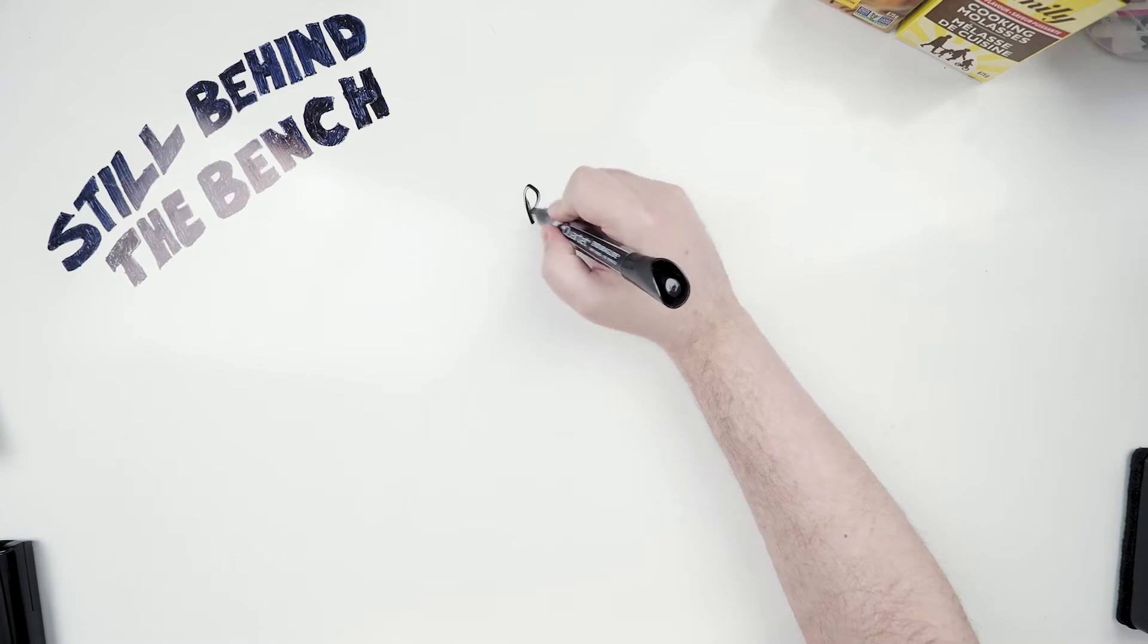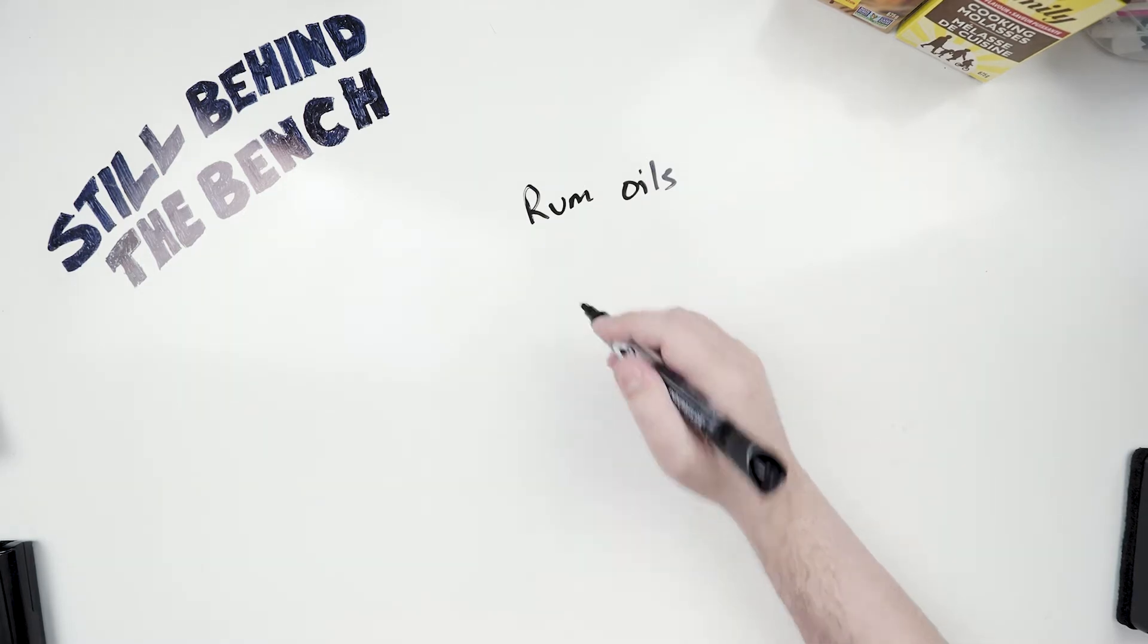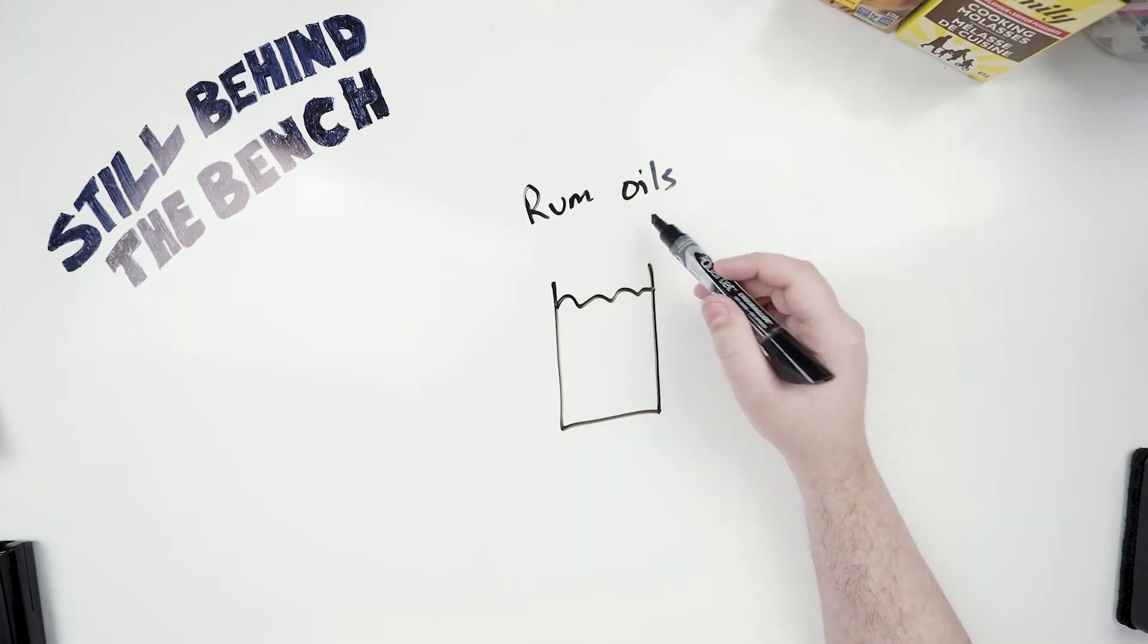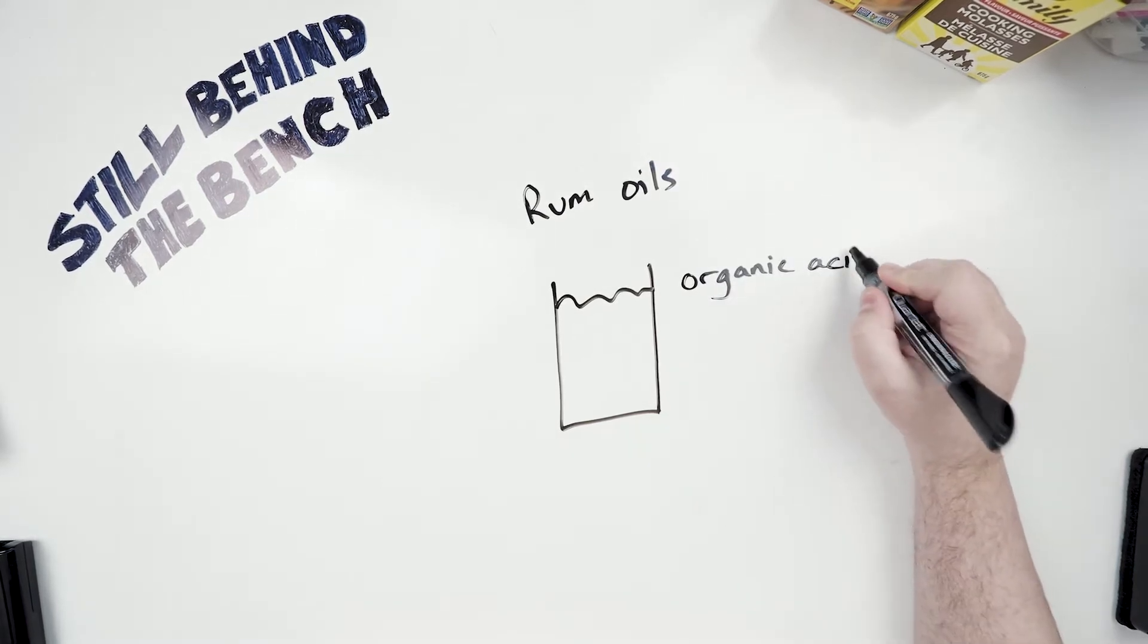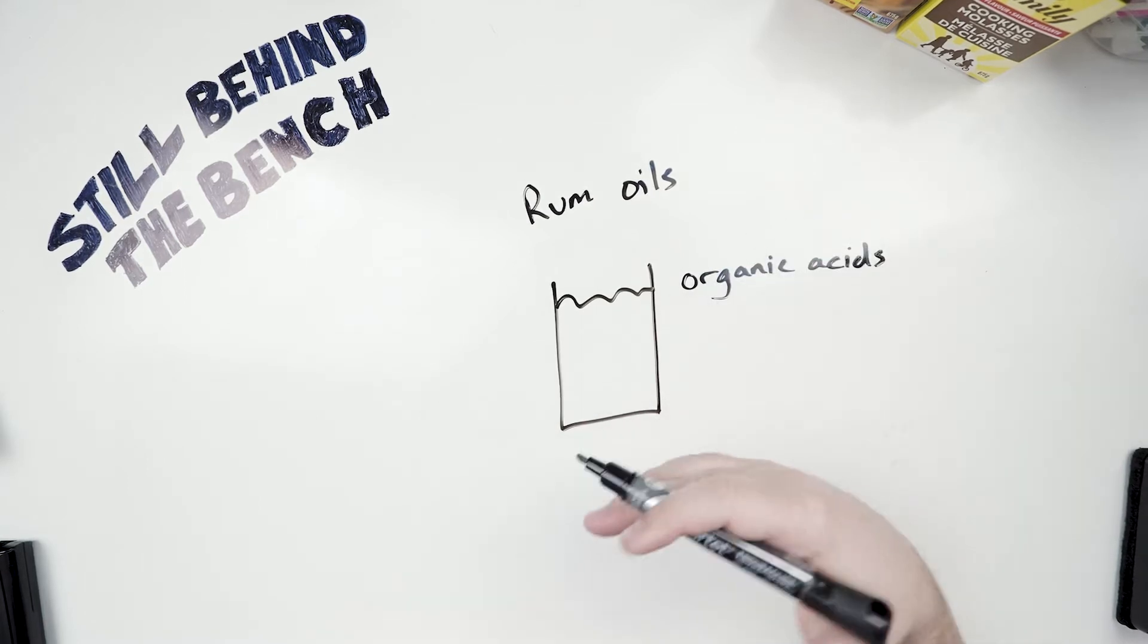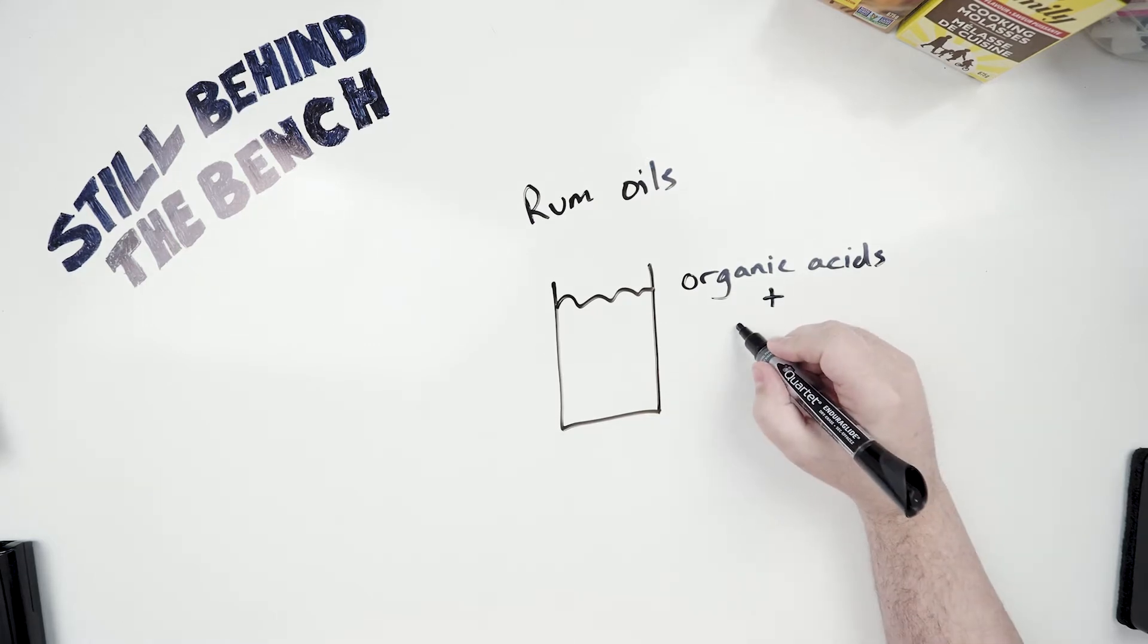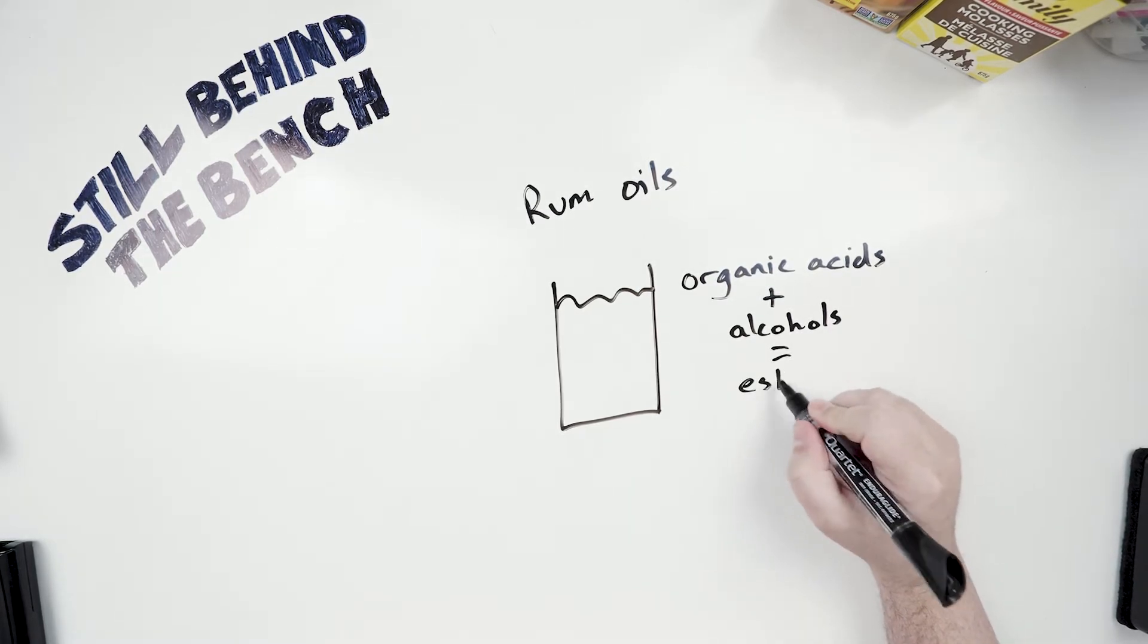But why do we even want to use these things in the first place? Well it's all about the rum oils. Rum oils are mostly made from esters and essentially what we're doing is when you have your muck pit, because it's a living thing with a life cycle, it creates a lot of precursors to the flavor compounds we call rum oils. Specifically there are a lot of organic acids being produced in the muck by these bacteria.